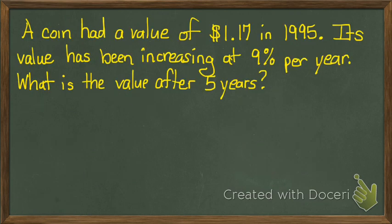Let's look at this first example. A coin had a value of a dollar and 17 cents in 1995. Its value has been increasing at 9% per year. What is the value after five years?